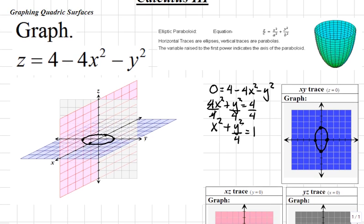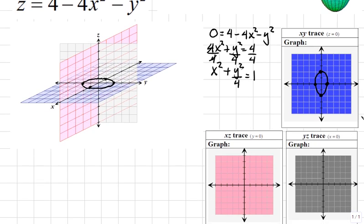Next, let's investigate the xz-trace by letting y be 0 in our equation. So if y equals 0, then z equals 4 minus 4x squared minus 0 squared, which would simplify to z equals 4 minus 4x squared.